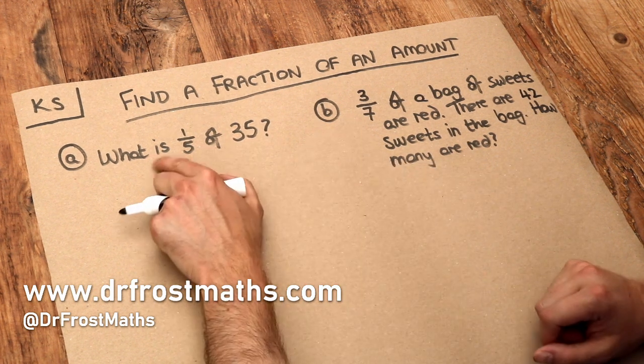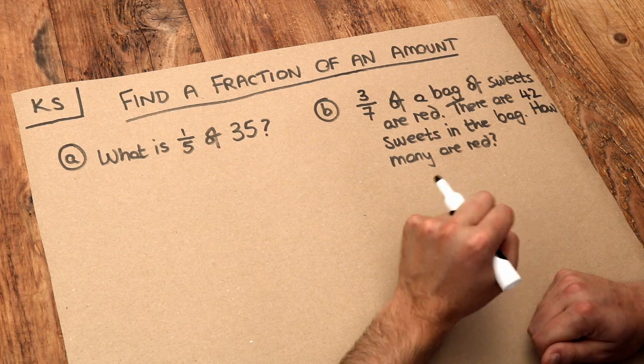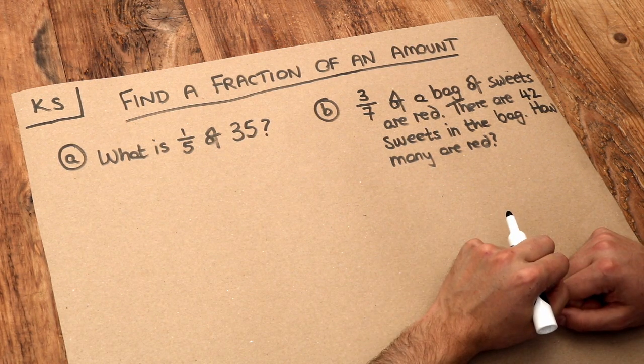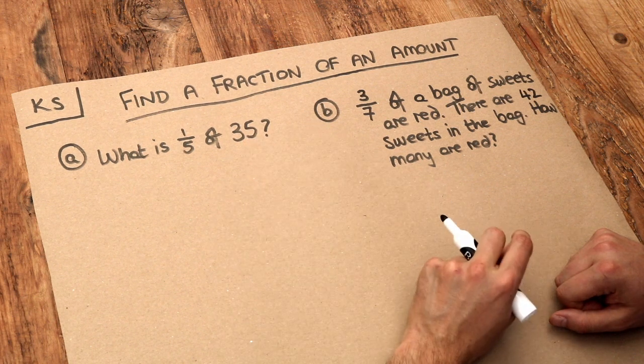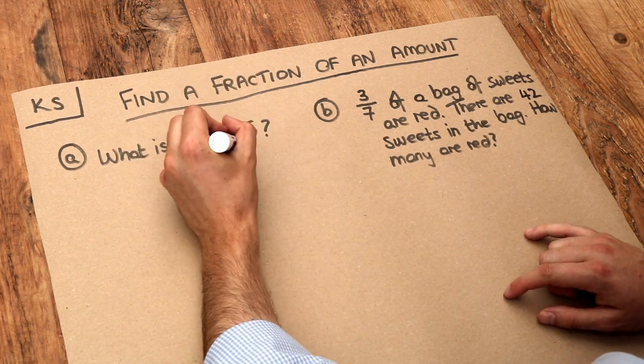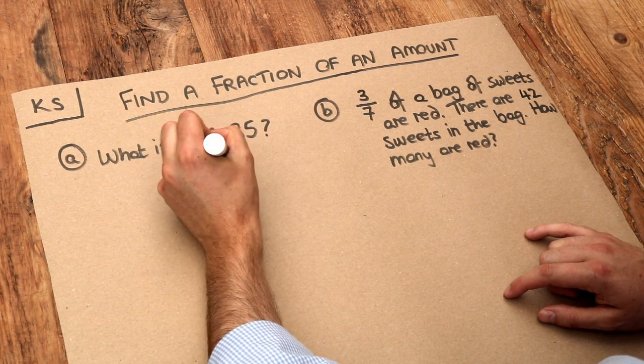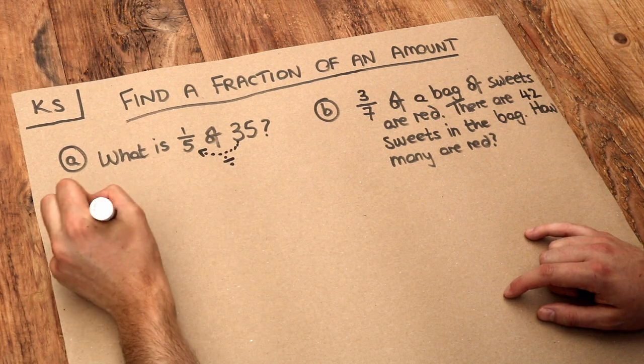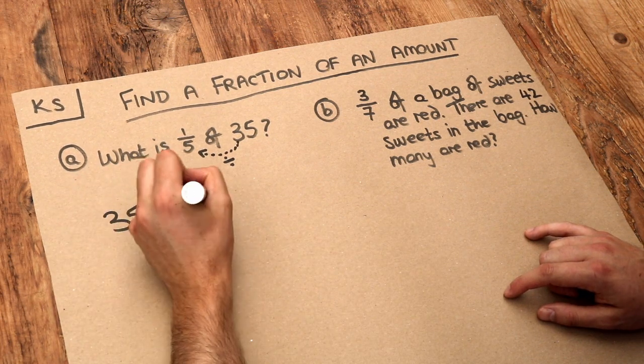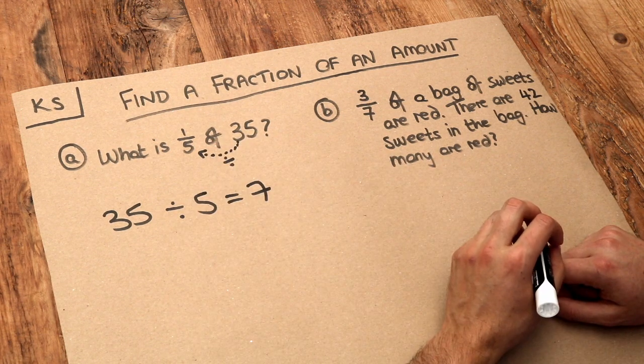In this first question we want to find a fifth of 35. To find a fifth of something means to divide it by five. So I just need to divide 35 by 5. Whatever the denominator is, we divide 35 by that number. 35 divided by 5 equals 7. So a fifth of 35 is 7.